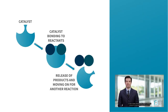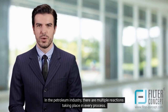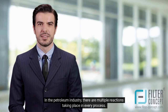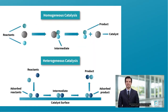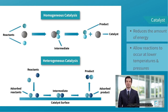In order to better understand the catalytic conversion process, it is important to analyze the role of a catalyst and its effect on the reaction. In the petroleum industry, there are multiple reactions taking place in every process. Understanding the chemistry of these reactions is essential in order to optimize the process. Certain reactions require severe conditions for the reactants to react and produce desirable products. In order to avoid certain problems, a suitable catalyst is used in a reaction. By doing so, catalysts can greatly reduce the amount of energy needed to complete the transformation, allowing reactions to occur at much lower temperatures and pressures than would otherwise be possible.